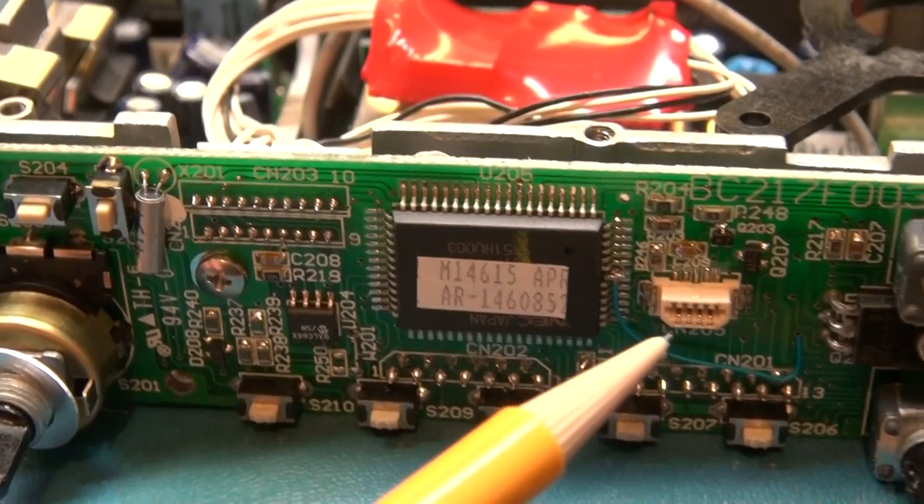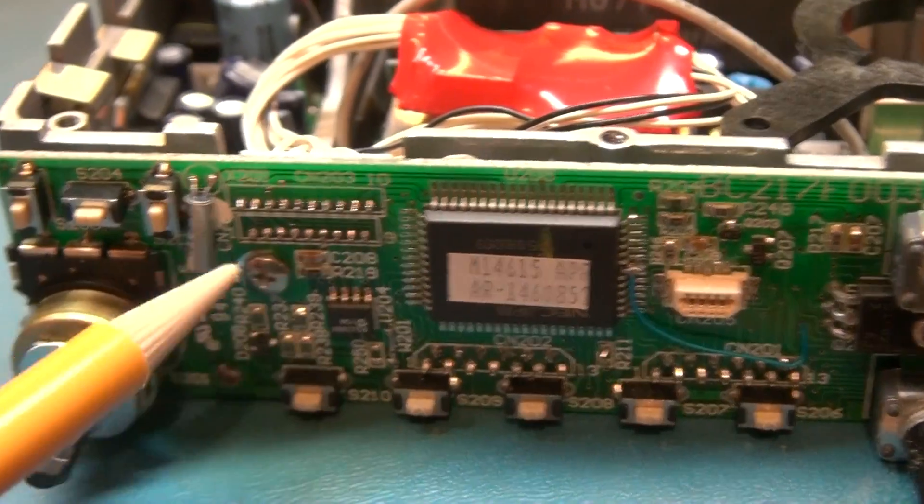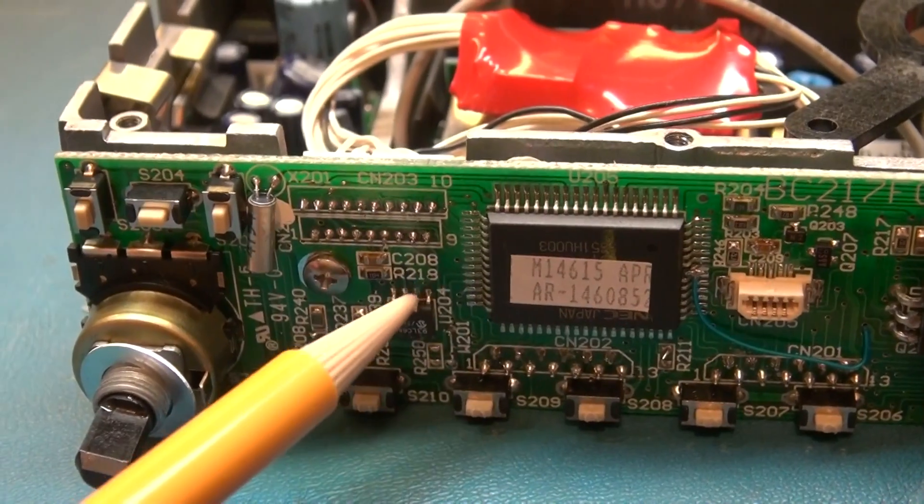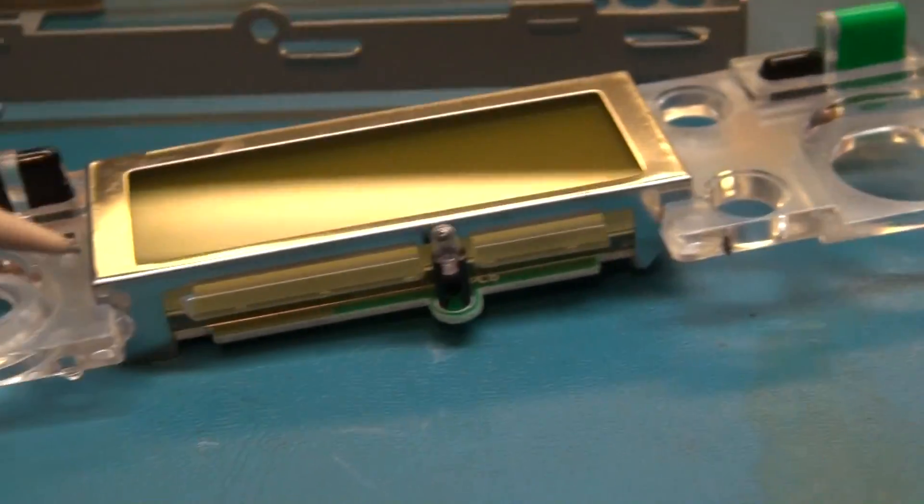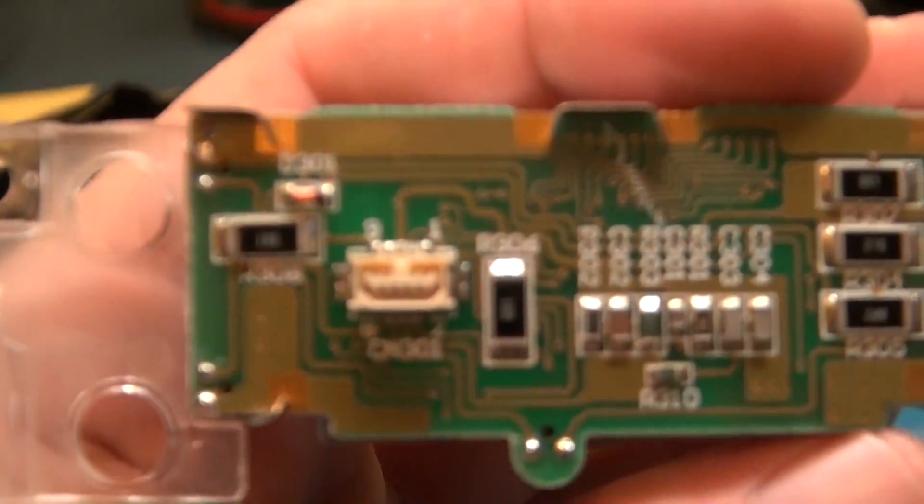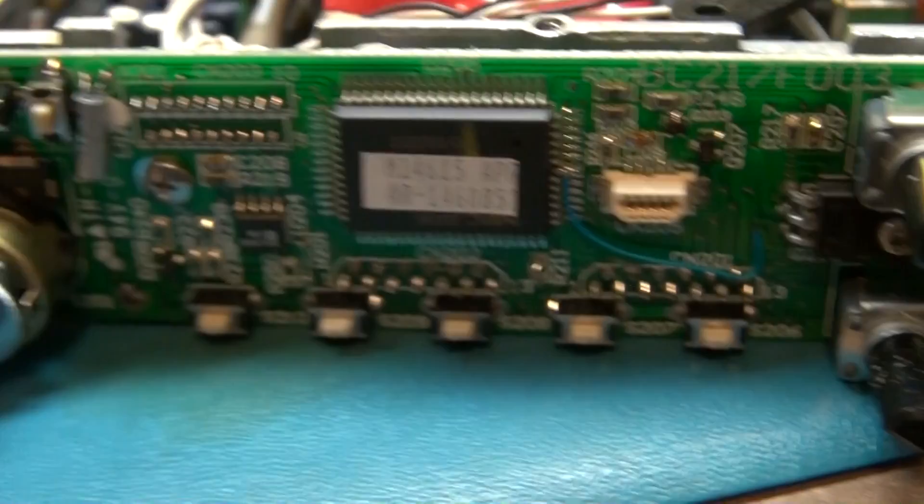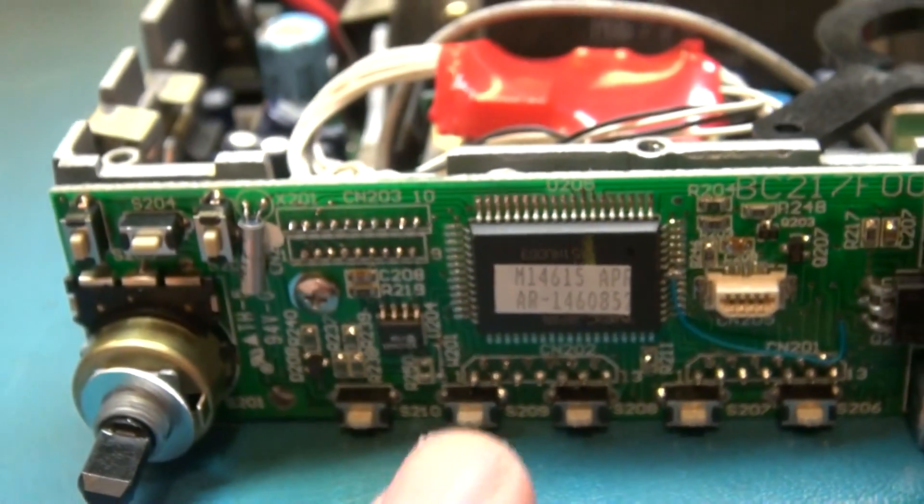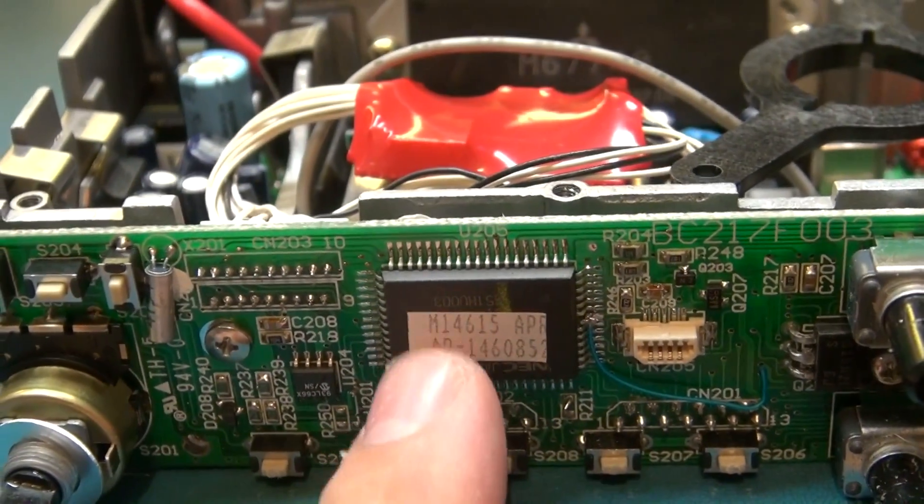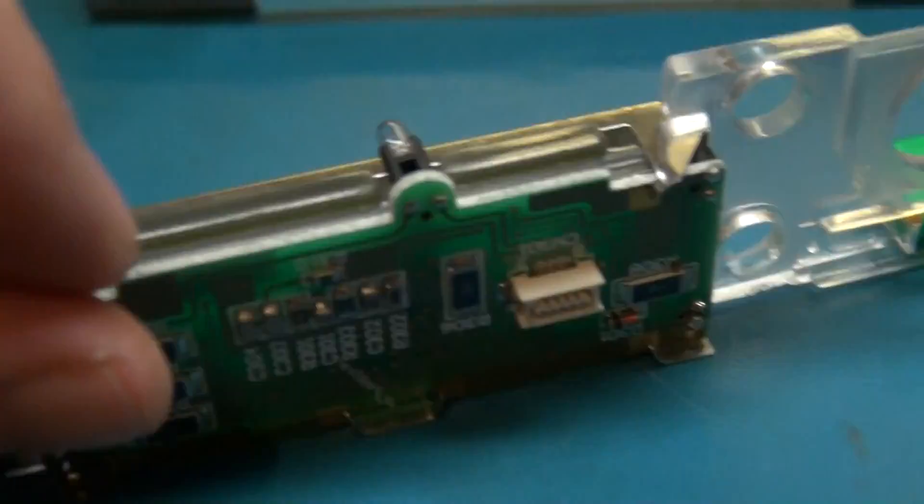I had a very similar radio with a problem with the display, and what I ended up finding out was the display itself - see how it just plugs into CN301 there? It plugs into the main connector on the processor board here.